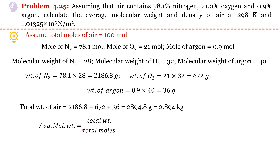Using the average molecular weight formula — total weight divided by total moles — with 100 as total moles, the average molecular weight of air comes out as 28.95 g/mol.